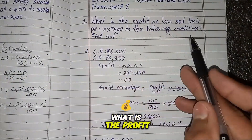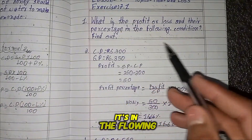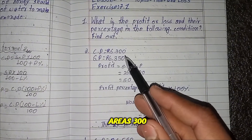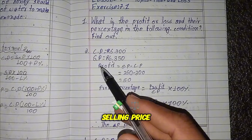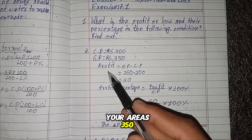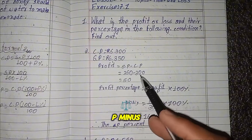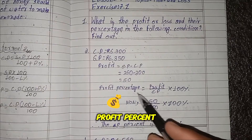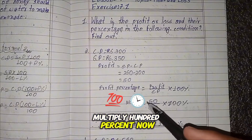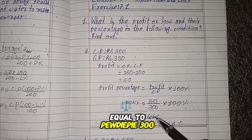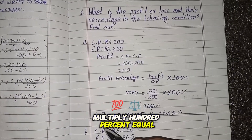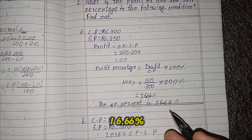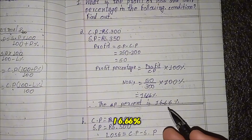Question 1: What is the profit or loss percentage in the following conditions? Part A: Cost price equals RS 300, selling price equals RS 350. Profit equals SP minus CP equals 350 minus 300 equals 50. Profit percent equals profit divided by CP multiplied by 100 percent equals 50 by 300 multiplied by 100 percent equals 16.66 percent. Therefore, the profit percent is 16.66 percent.